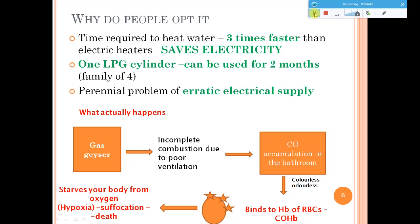In joint families, gas geysers are installed because there are more people in the house and they want to save on electricity bills. They are unaware of the poisonous conditions that can arise. Additionally, since electricity supply is often erratic, people opt for gas geysers because they do not require electric supply — only gas and batteries — to heat the water.